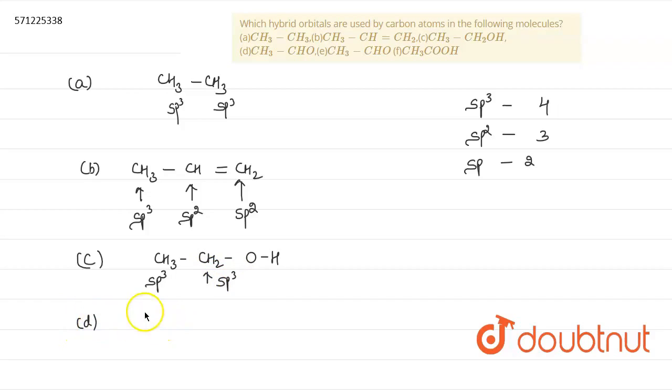Next, we have the fourth option, CH3-CH double bond-O. This is an aldehyde. This carbon has one, two, three sigma bonds. That's why it is SP2 hybridized. And this carbon involves four sigma bonds, so it will be of SP3 hybridization state.